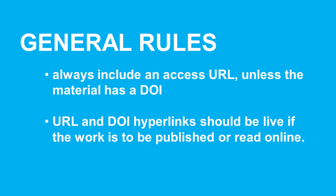There are some general rules for referencing online resources in APA. You should always include an access URL unless the material has a DOI. URL and DOI hyperlinks should be live if the work is to be published or read online, as this will allow the reader to go directly to the content. Hyperlinks can be displayed in the default settings of your word processor, underlined with blue text, or in plain text.